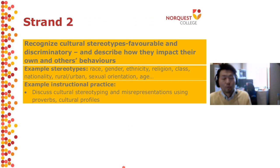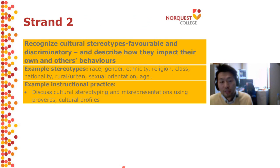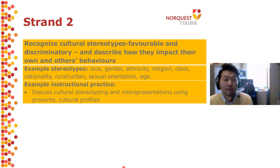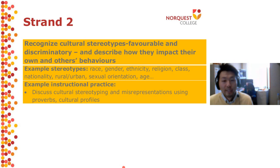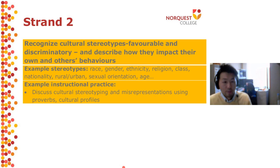Now we're moving to Strand Two, which was reported to be taught the least. Strand Two is about recognizing cultural stereotypes — favorable and discriminatory — and describing how they impact one's own and others' behaviors. Examples include race, gender, ethnicity, religion, class, nationality, rural/urban divide, sexual orientation, and age. An example practice is to have a discussion.